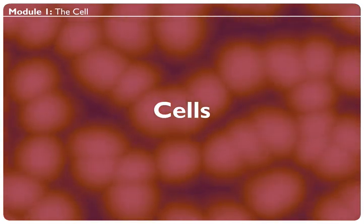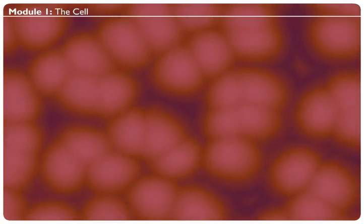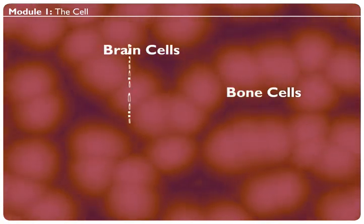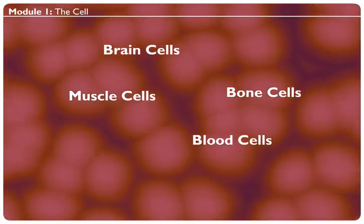Your body is made up entirely of cells. You are a pile of cells. Brain cells, bone cells, muscle cells, blood cells, and skin cells.